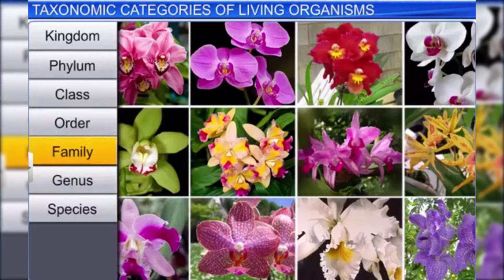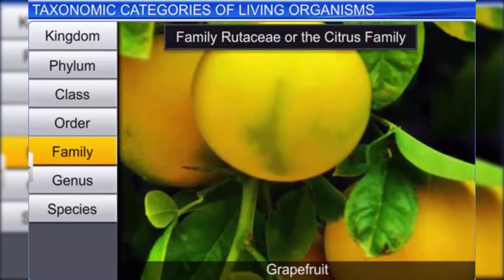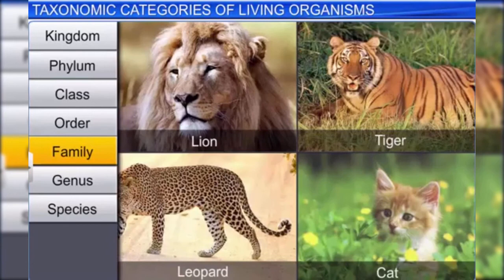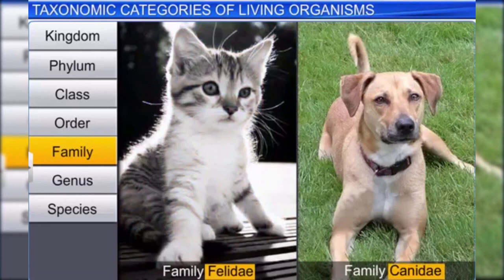Among animals, lion, tiger, and leopard are closely linked and are in the genus Panthera. The genus Panthera differs slightly from genus Felis, which includes cats. The next rank is family, which consists of a group of related genera with fewer similarities compared to genus and species. For example, orange, lemon, and grapefruit belong to the family Rutaceae. Lion, tiger, leopard, and cat fall into the family Felidae.